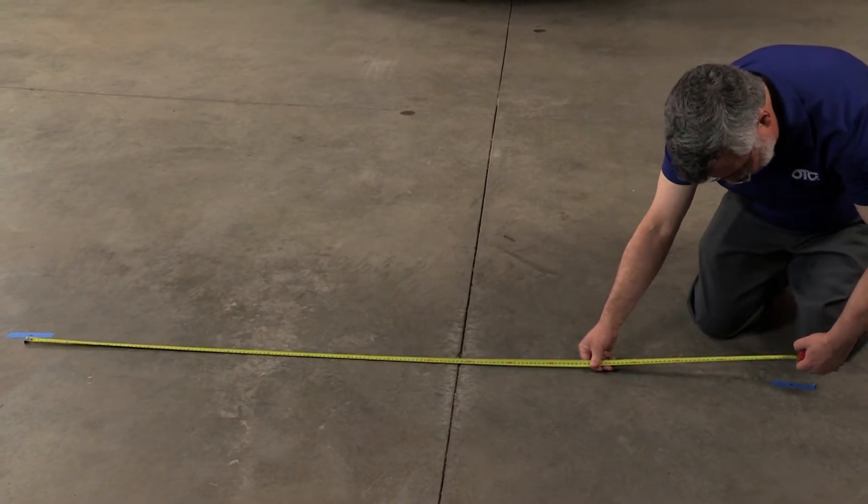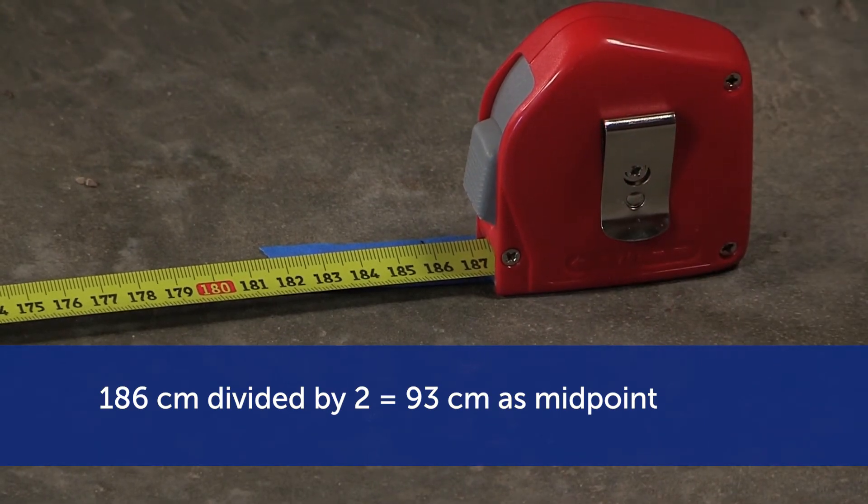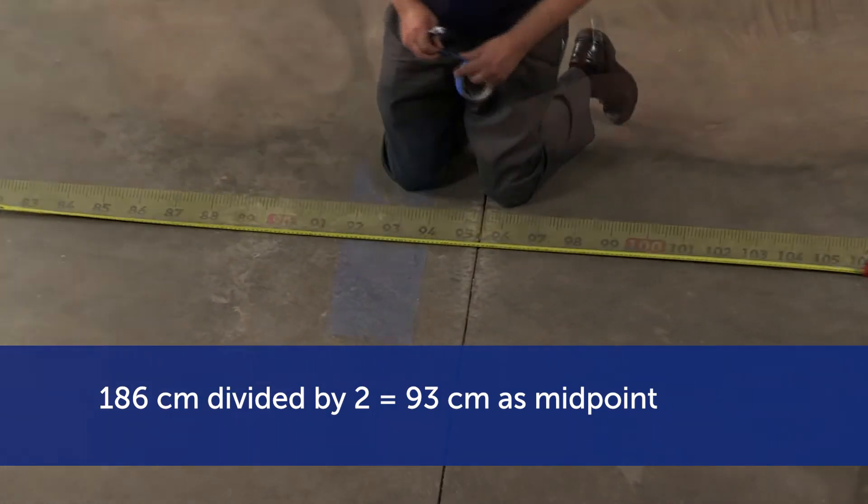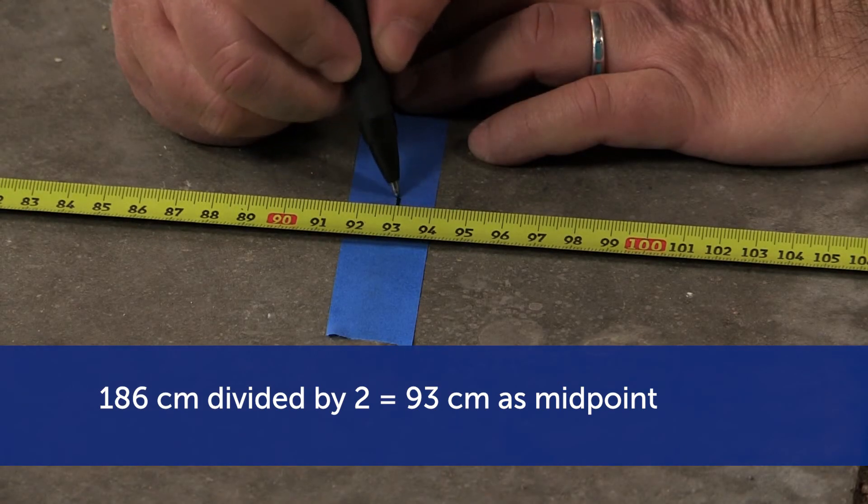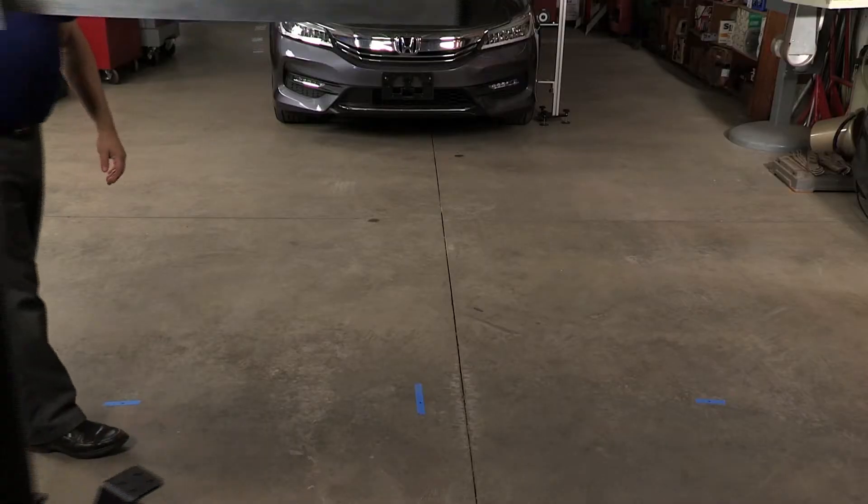Now we are going to determine the centerline mark for the target stand. Measure the distance from the two marks you made at 300 centimeters from the front wheel centering stands. Divide the distance by two and find the center between the two marks. Mark the center.